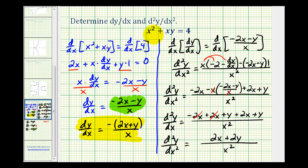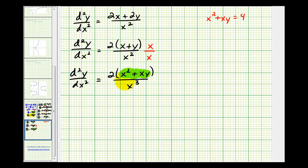The original equation was given as x squared plus xy equals 4. So using the given equation, we can replace x squared plus xy with 4, which does simplify our second derivative. So we have 8 all over x cubed for our second derivative.